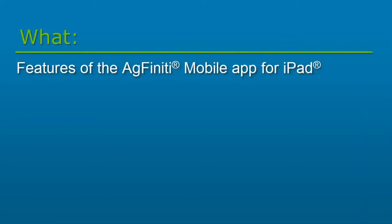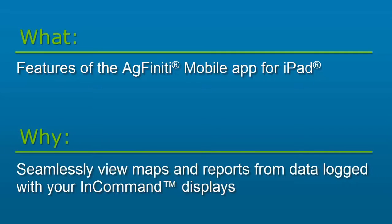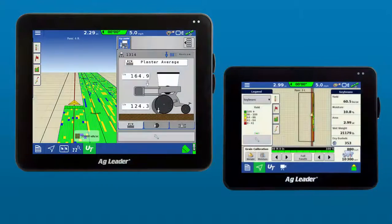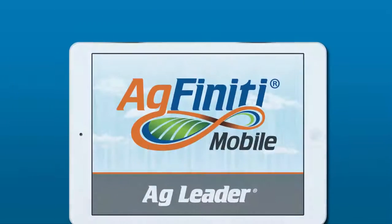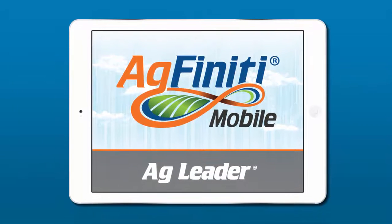In this video, we will discuss the features of the Agfinity Mobile app. Agfinity Mobile is our companion app that lets you seamlessly view maps and reports from data logged with your in-command displays. Do you want an easier way to view the data you collect in the field? Then check out the Agfinity Mobile app from Ag Leader.